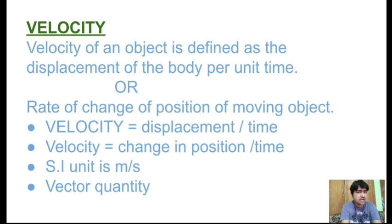Velocity is equal to displacement upon time. And displacement is the change in position. Hence, velocity is equal to change in position upon time. The unit of velocity is also meter per second, and it is a vector quantity. Speed is a scalar quantity. This is your speed and velocity concept. The next topic is uniform motion and non-uniform motion, which will be covered in the next video. Thank you class.